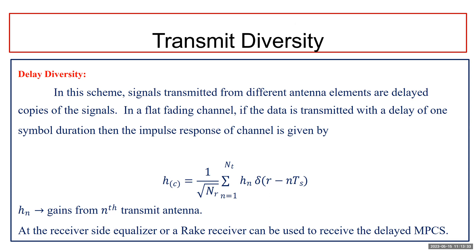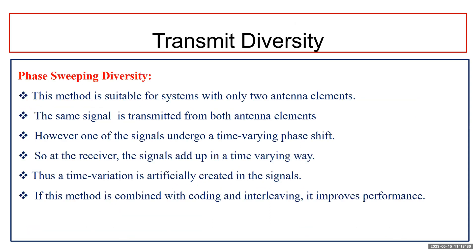The second technique is phase sweeping diversity, which is especially useful when there are only two antenna elements. The same signal is transmitted from both antenna elements; however, one of the antenna signals undergoes a time-varying phase shift. This means the received signals add up in a time-varying way, introducing temporal variations into the channel. Even if the transmitter, receiver, and environment are stationary, the signal does not remain stuck in a fading dip. When combined with coding and interleaving, this method improves SNR performance.